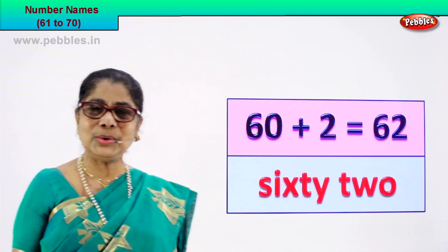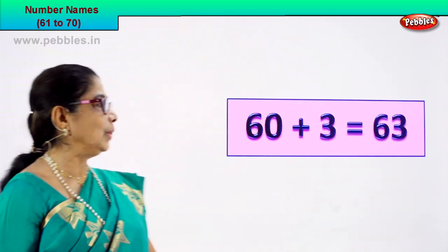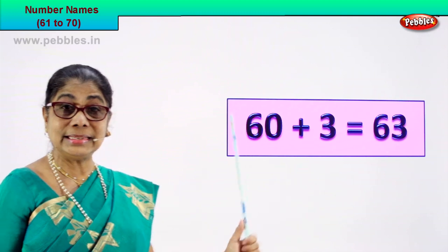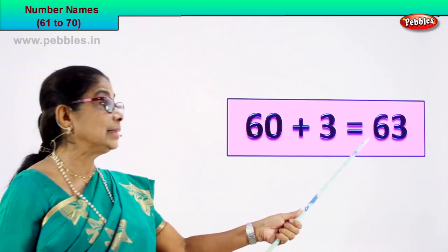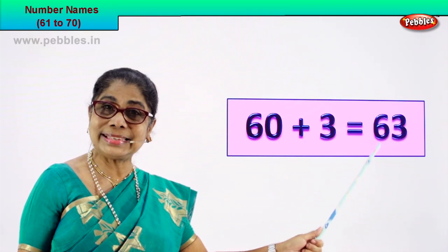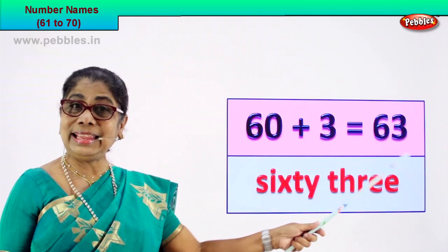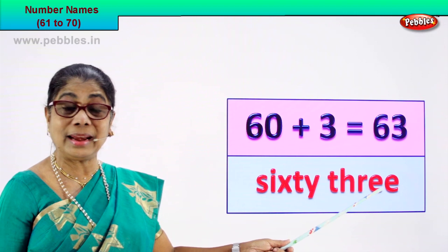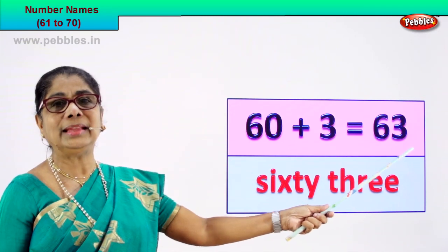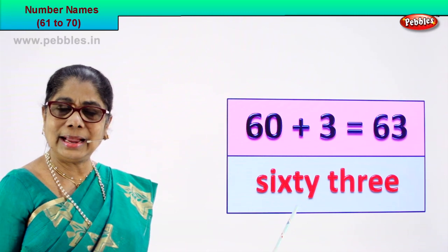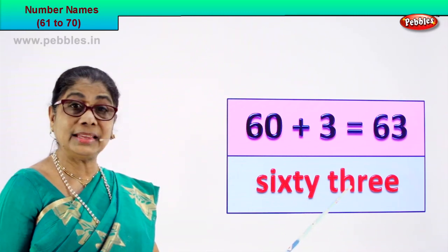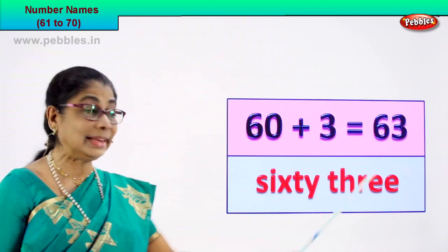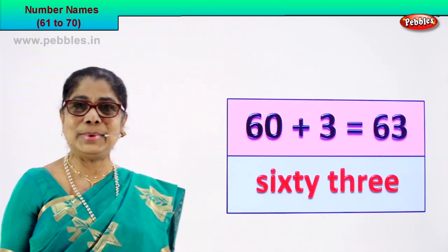Did you enjoy? Shall we go to the next number? Look! 60 plus 3 is equal to 63. 6 and 3, 63. Now the numeral 63. How do we write its name? Spell and write. You already know 60, you know 3 — that's all. S-I-X-T-Y, and T-H-R-E-E. 63 — the number name.